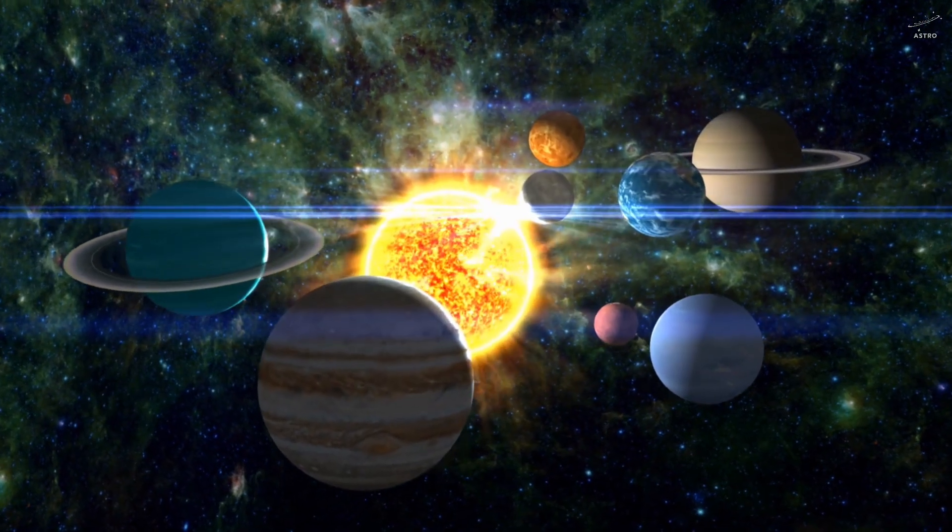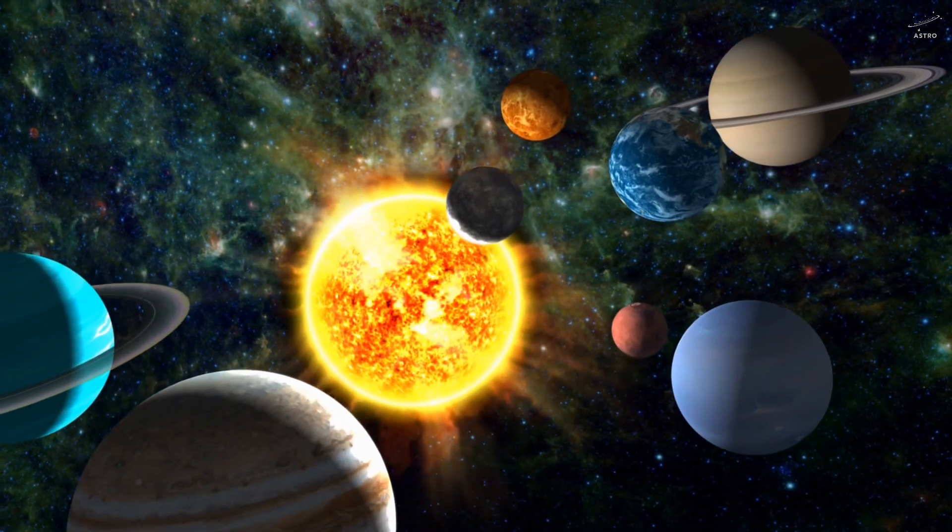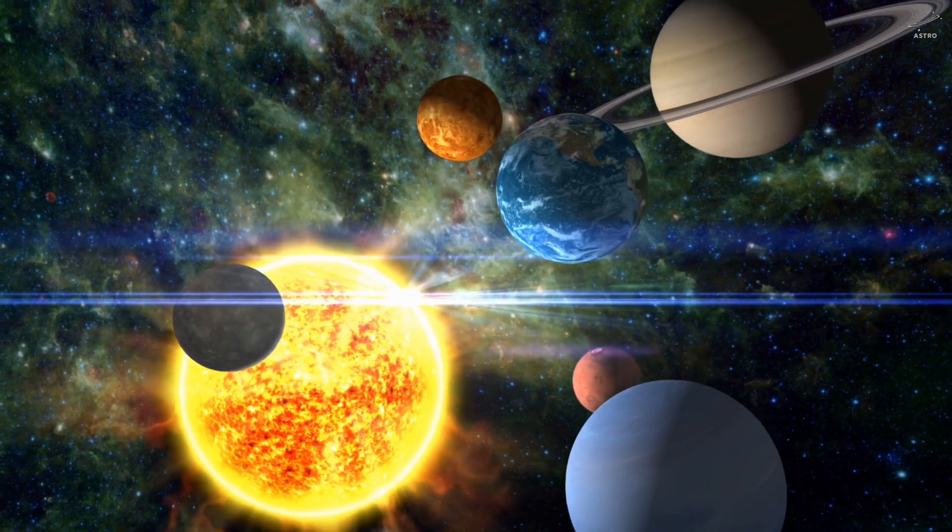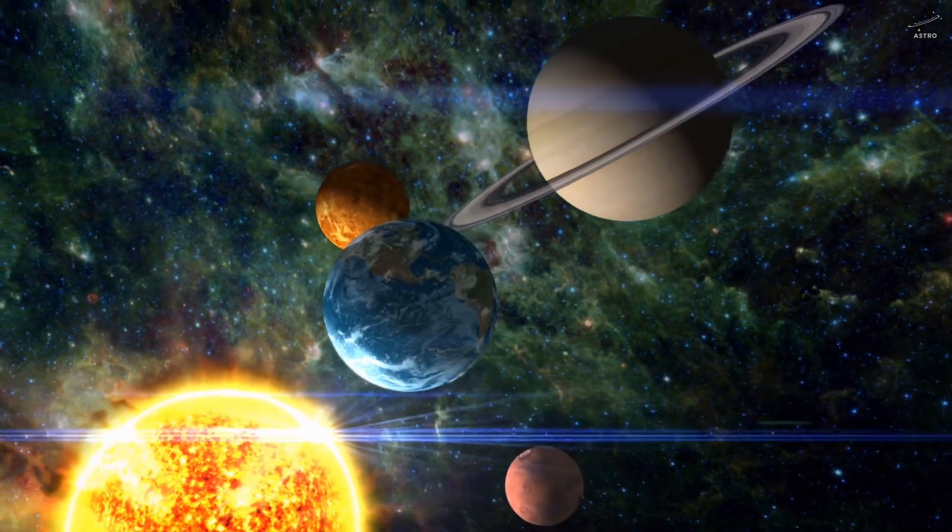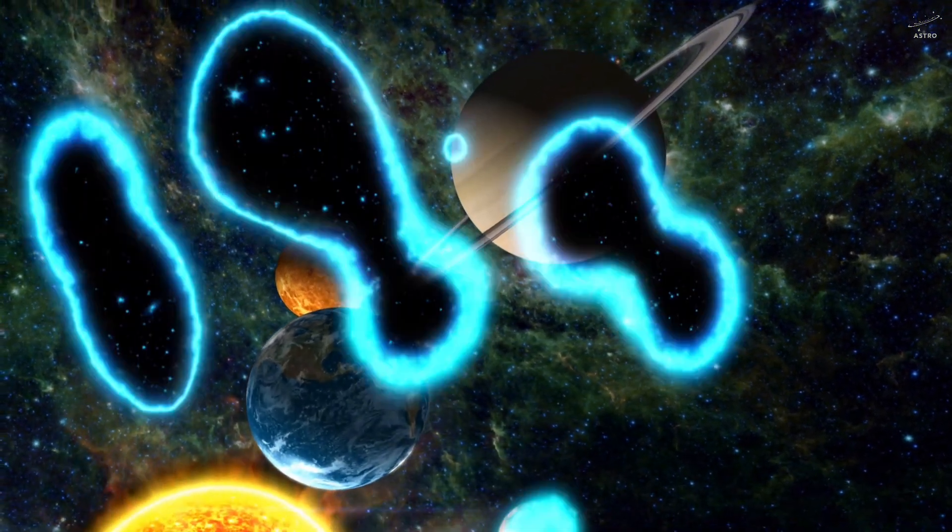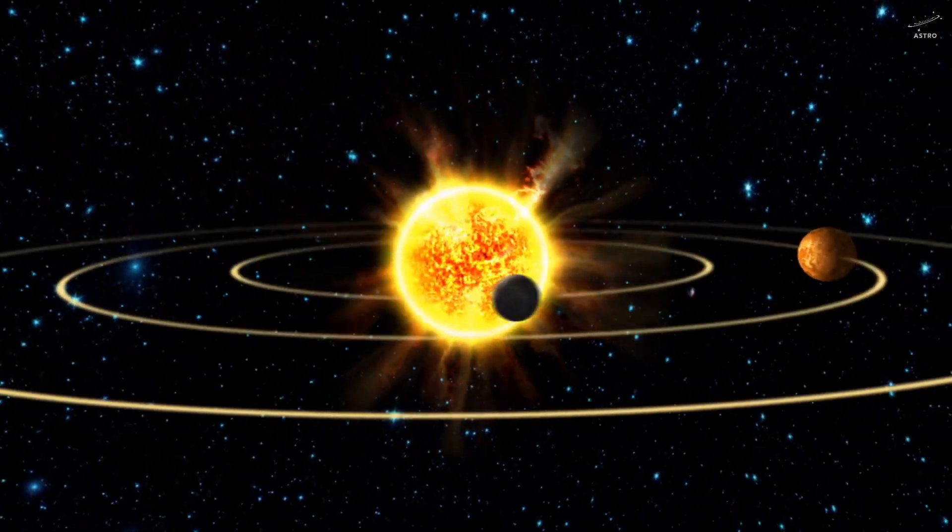Now think about this. The sun is massive. About 330,000 times heavier than Earth. Its gravitational pull is colossal. By all logic, Earth should be falling straight into it. So why doesn't it? The answer is simple and elegant. Sideways velocity.